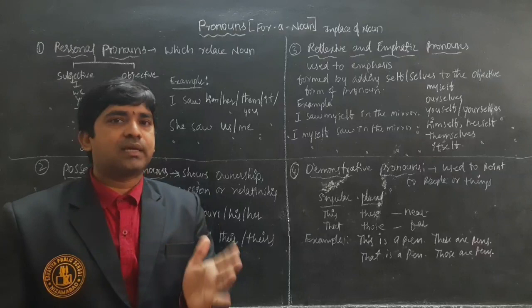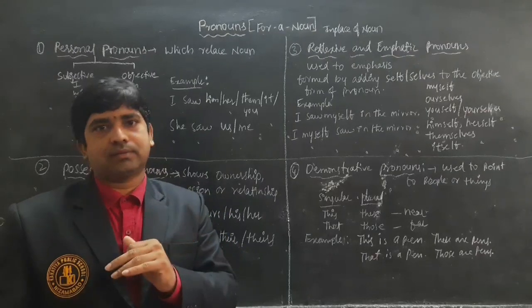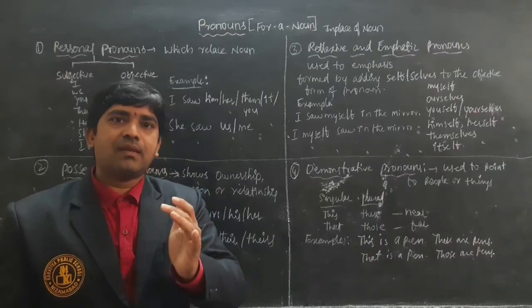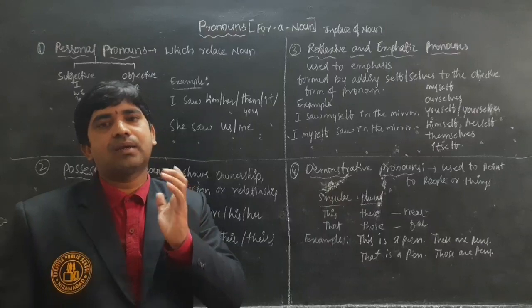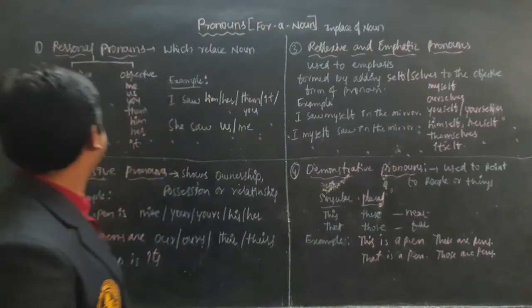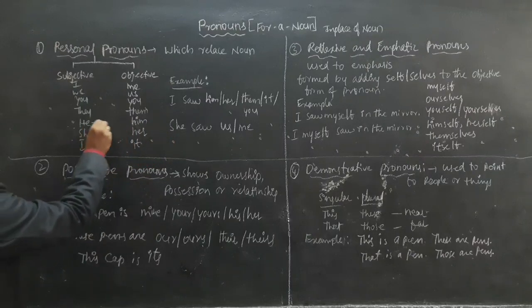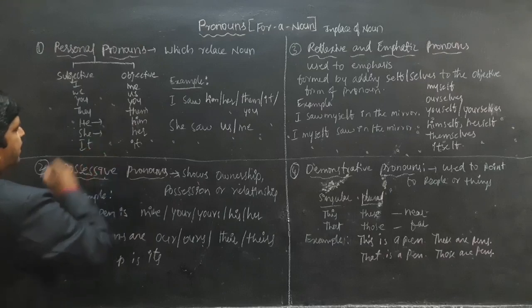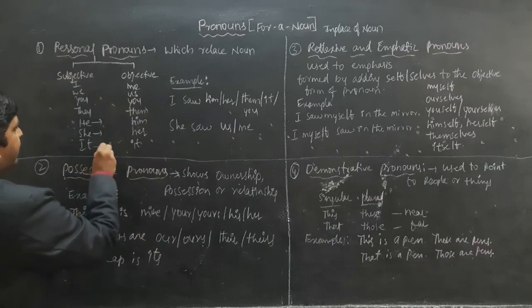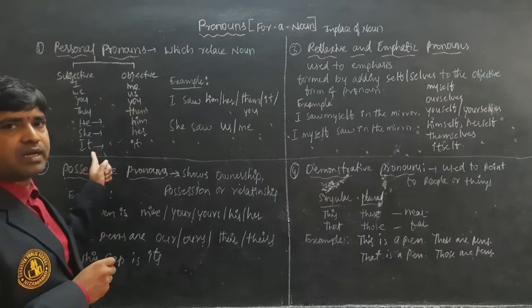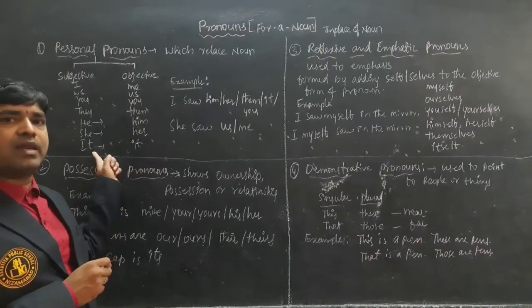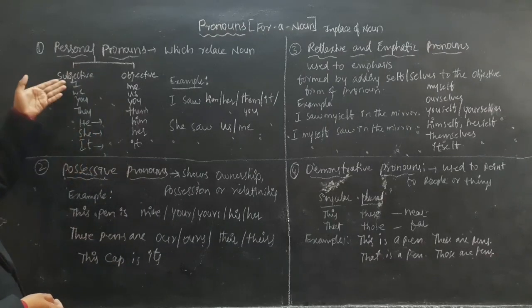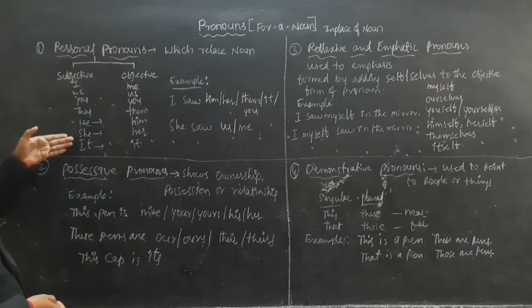In this we have singular and plural, and also feminine, masculine, and neuter gender. 'He' we use for masculine gender, 'she' for the feminine gender, and 'it' is an impersonal pronoun used for things or non-living things. In the subjective case we use: I, we, you, they, he, she, it.